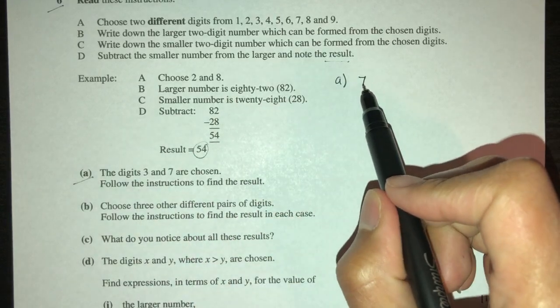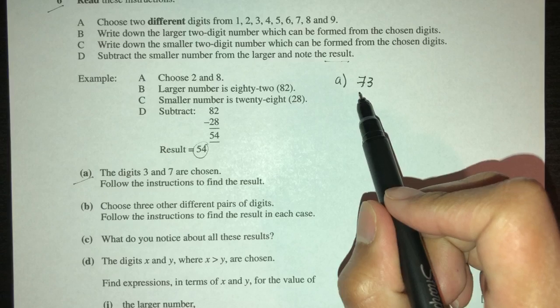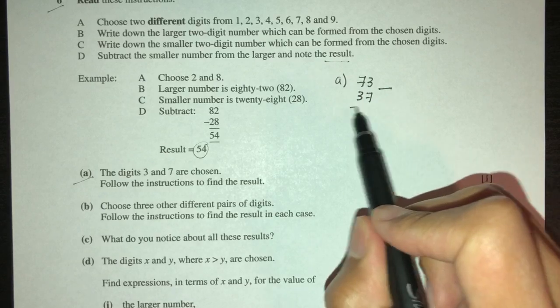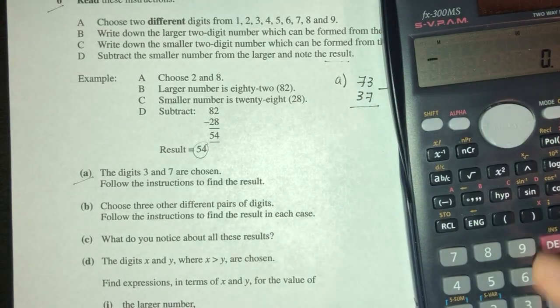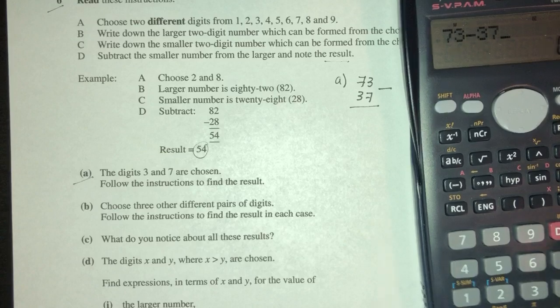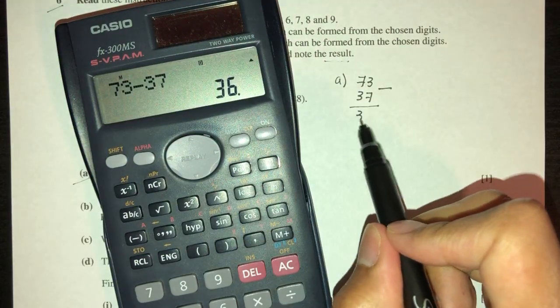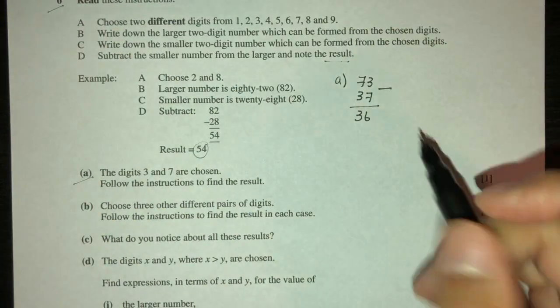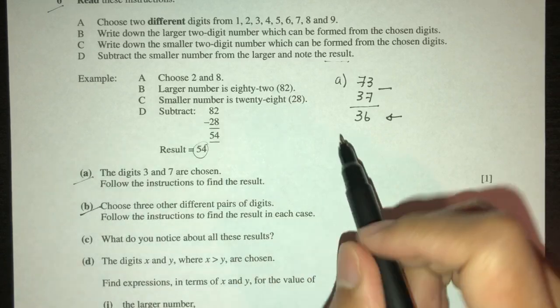Now we have to follow the instructions, so the first one is we have to write the larger, which will be 73, and the smaller is 37. So we have to subtract to find the result: 73 minus 37, that should give you 36. The answer for part (a) will be 36.